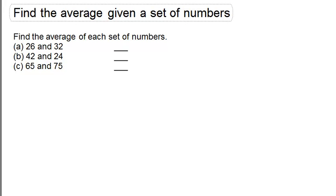Find the average given a set of numbers. Recall that the average of any set of numbers is equal to the sum of the numbers divided by the number of parts. So that's the key formula.